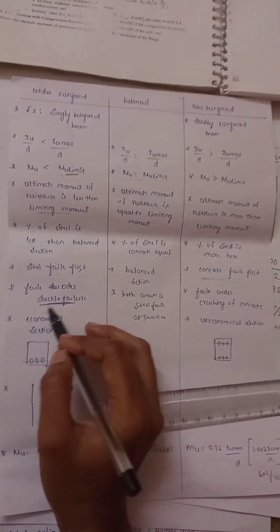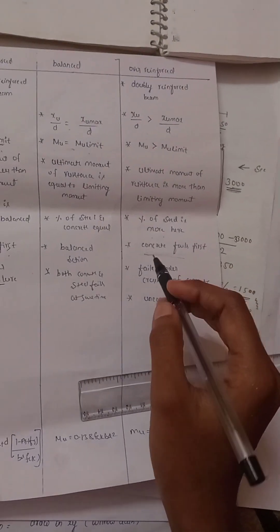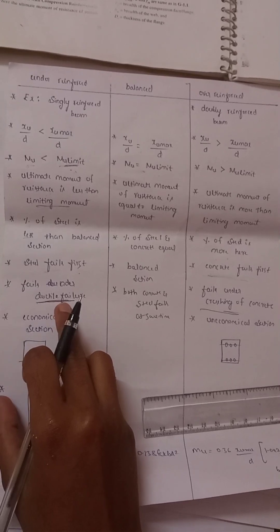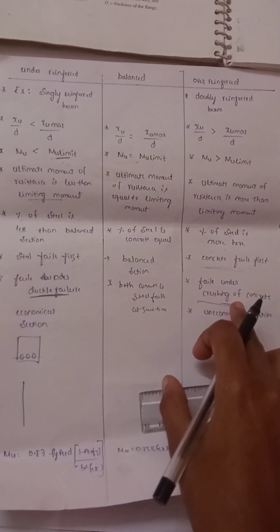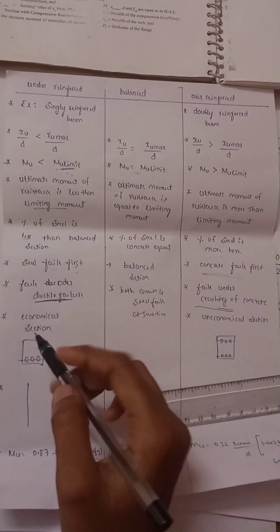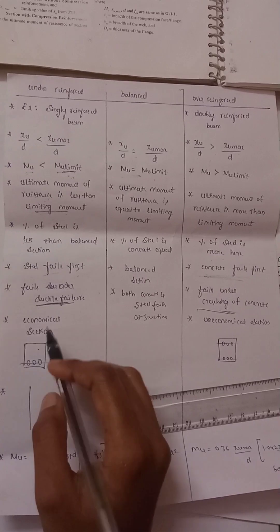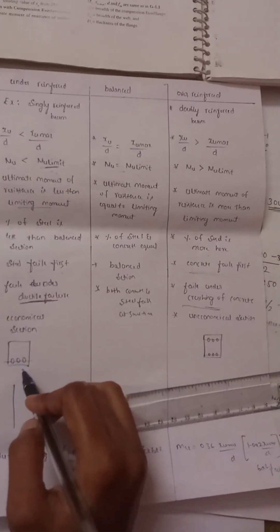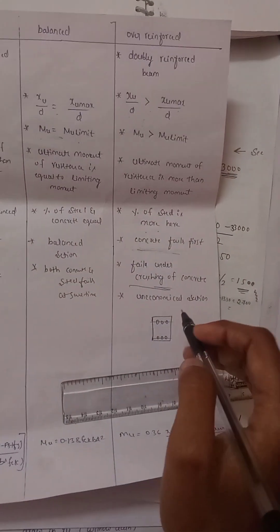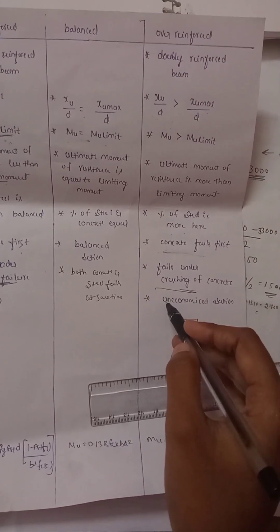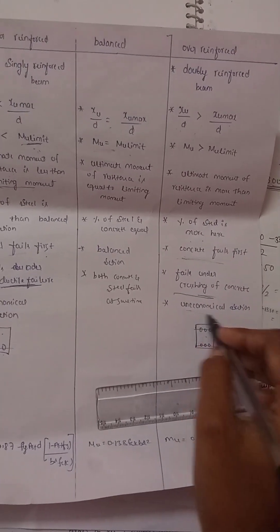Under-reinforced sections fail by ductile failure; over-reinforced sections fail by crushing failure. Under-reinforced sections are economical because the steel quantity is less. Over-reinforced sections are uneconomical because more steel is used; the concrete quantity is also increased, making it uneconomical.